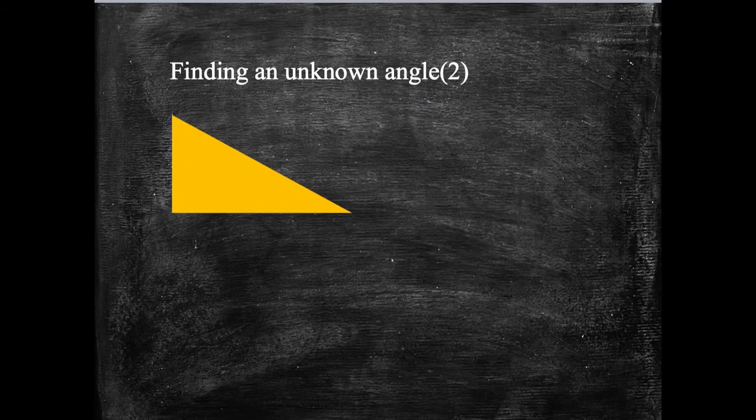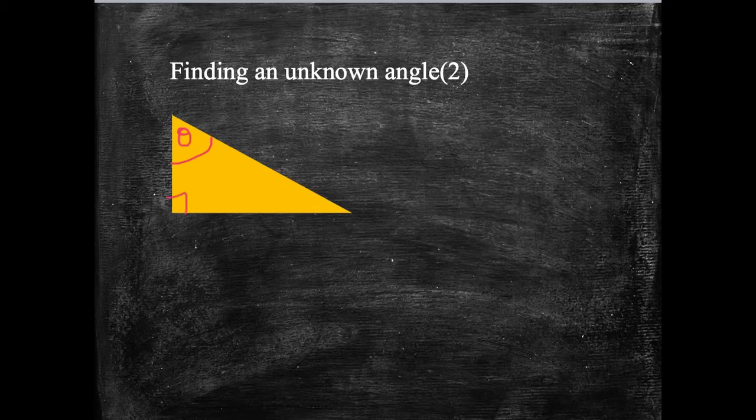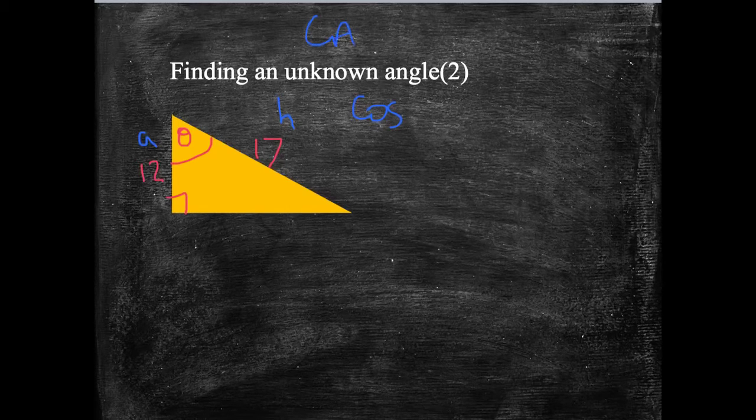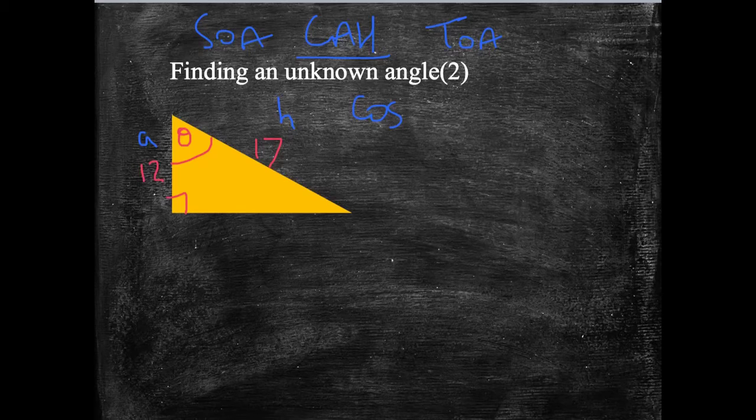Let's have another example. This time, I'm going to write my missing angle up here, theta. Here's my right angle. I've got a side of 12 units and a side of 17 units. Let's think what we've got. This time, I've got the hypotenuse, and I've got the side next to the angle, A for adjacent. Cos has the CAH part, so CAH TOA. So CAH has got A and H. We're going to use cos of the angle equals adjacent over hypotenuse, so 12 over 17.